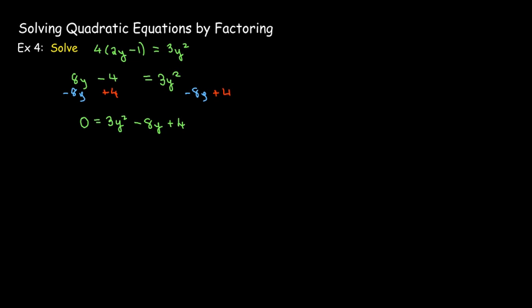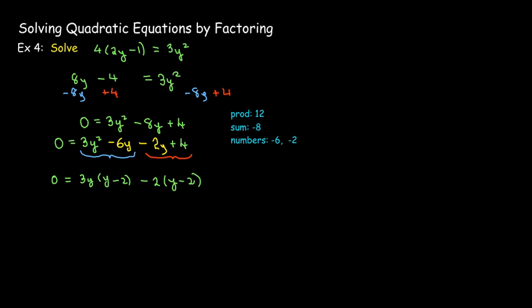Look for two numbers which multiply to make positive 12 and add to make negative 8. Those numbers would be negative 6 and negative 2. So I will rewrite the negative 8y as negative 6y and negative 2y, and then factor by grouping. And so after I take out common factors and write it as the product of two binomials, that means that either 3y minus 2 equals 0 or y minus 2 equals 0.